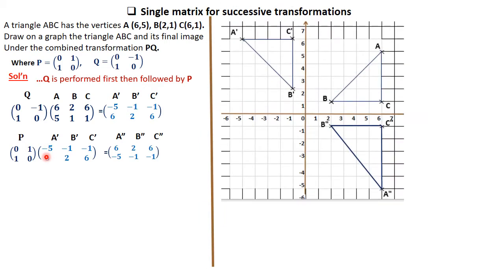If you plot the three triangles, we have this diagram here. This was the original triangle where A was (6,5), B was (2,1), and C was (6,1). That was transformed under Q to give triangle A'B'C', where A' is (-5,6), B' is (-1,2), and C' is (-1,6). That was then transformed under matrix P [0,1; 1,0] to give triangle A''B''C'' where A'' is (6,5), B'' is (2,1), and C'' is (6,1).